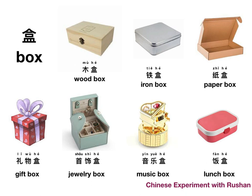So 木盒 — 木 means wood, a wooden box. 铁盒 — 铁 means iron, an iron box. 纸盒 — 纸 means paper, a paper box. Remember 纸 — paper — the paper we write on. We will see a lot of things made of paper later, so remember this.